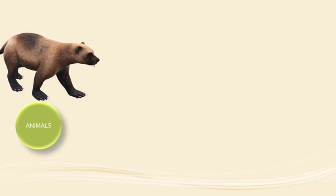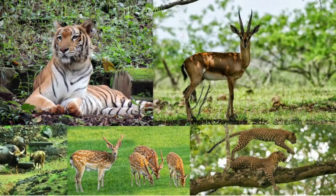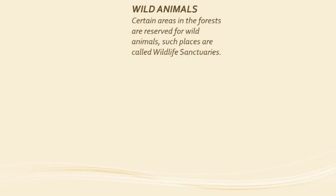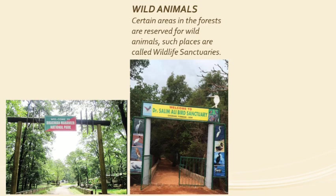Now we shall learn about the natural resource of animals. We shall learn about wild animals, wildlife sanctuaries, birds and reptiles. Goa has many wild animals but their number is decreasing. The Goa government wants to prevent animals from being killed, so certain areas in the forest are reserved for wild animals. Such places are called wildlife sanctuaries. In Goa we have one national park at Molim, one bird sanctuary at Shorao, and five wildlife sanctuaries. The largest is the Bhagawan Mahavir Sanctuary.